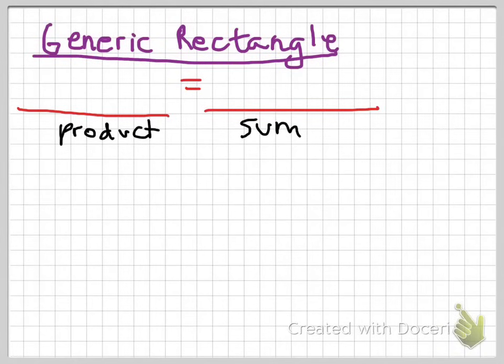Okay, so a quick video on the generic rectangle. Here's how it works. You're going to see a lot of this in our classroom. The generic rectangle is a way to turn a product into what we say is a sum. So we're turning a product into a sum.